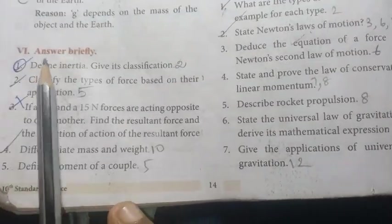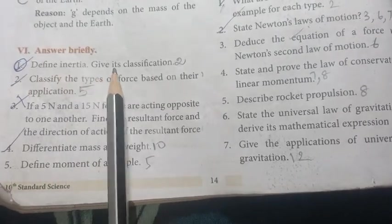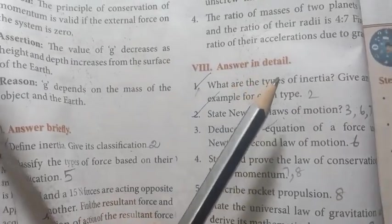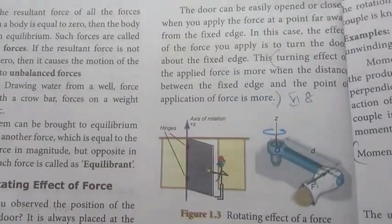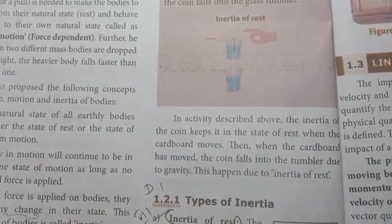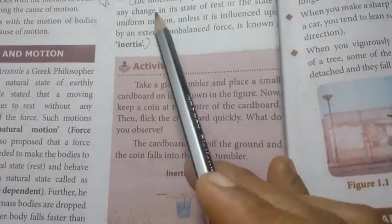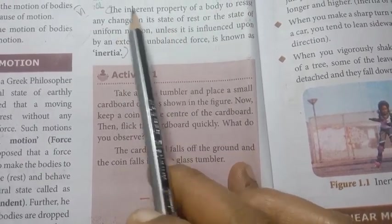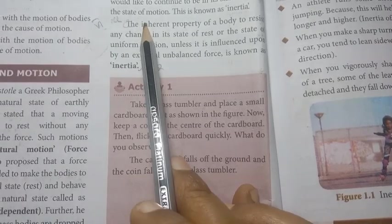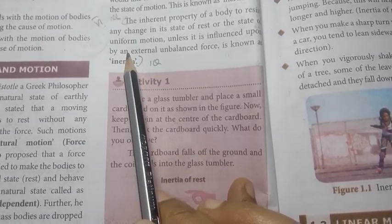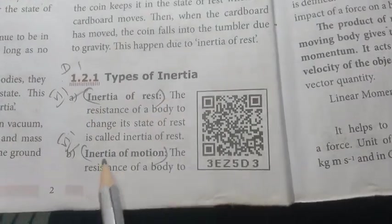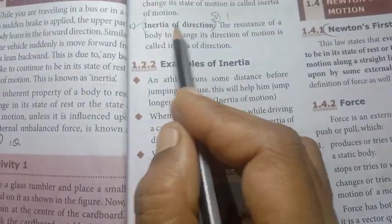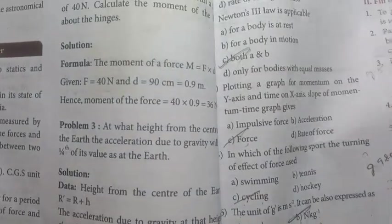Roman numeral VI — Answer briefly. First: define inertia and give its classification. Inertia is the inherent property of a body to resist any change in its state of rest or motion. The three types are: inertia of rest, inertia of motion, and inertia of direction.